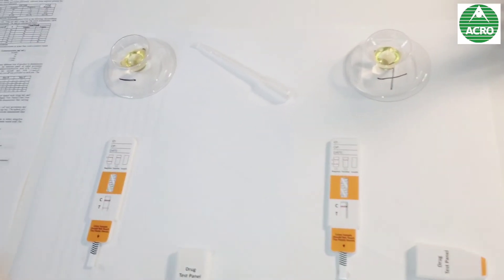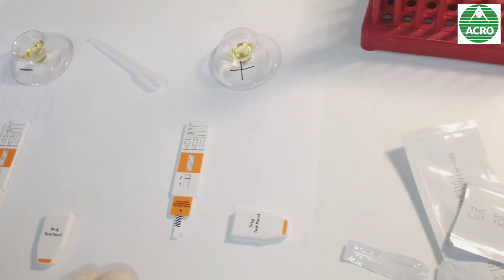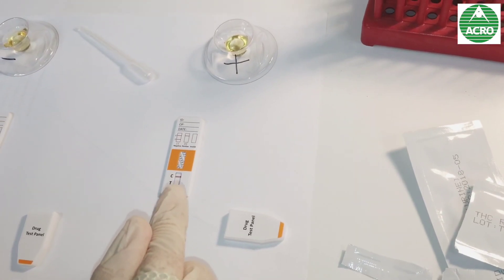So in the negative urine, we can see both lines, the testing and the control line. But in the positive one, we can only see the control line and not the testing. That means indeed he was high yesterday night. Say no to drugs.